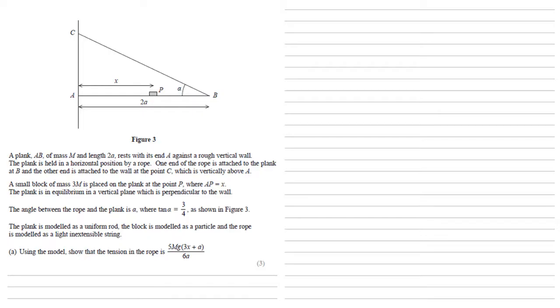So the first thing to do, as always, is to put our forces onto the diagram. We know that the block has a mass of 3M, so the force of gravity acting downwards will be 3MG. As it's a uniform rod, this force is right in the middle of that plank. And we've got the tension in the rope coming up along the rope from the point B.